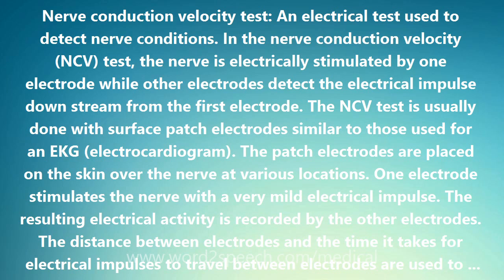The Nerve Conduction Velocity, or NCV: a decreased speed of nerve conduction indicates nerve disease. The NCV test is often done at the same time as an electromyogram EMG in order to exclude or detect both nerve and muscle conditions.